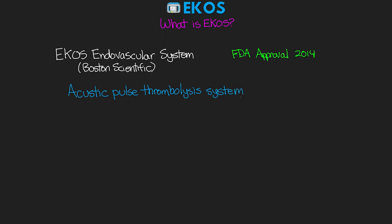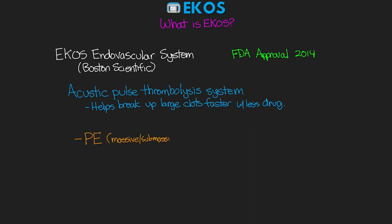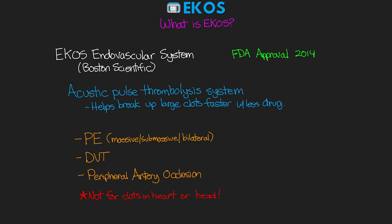Essentially what it does is it helps to break up large clots faster with less drug required. The main types of clots we're going to use it for are pulmonary embolisms — massive or submassive as well as bilateral PEs — deep vein thrombosis or DVTs, and peripheral artery occlusion. This device cannot be used for any clots in the heart or the head, and the clot generally needs to be at least three millimeters or larger.